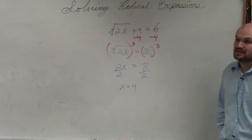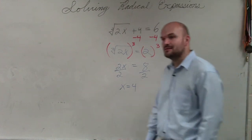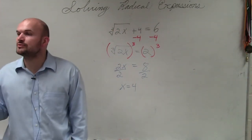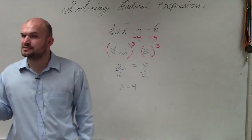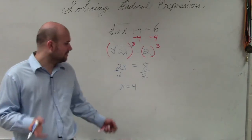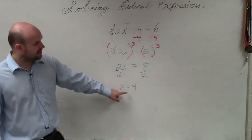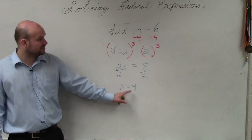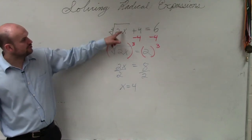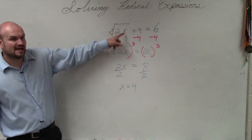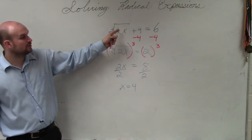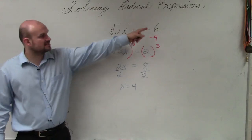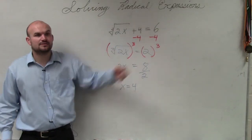We have to make sure we check our answers. So I'm going to go back and look at the solution. 2 times 4 is 8. The cube root of 8 is 2. 2 plus 4 equals 6, which obviously equals 6. ✓